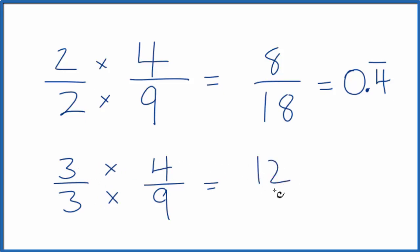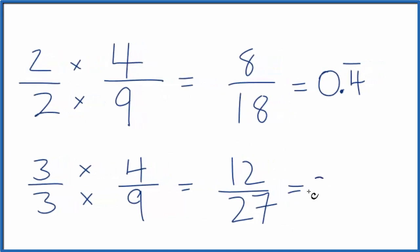3 times 4 is 12, 3 times 9 is 27, that's an equivalent fraction for 4 ninths. If you divide 12 by 27, you get the same thing.